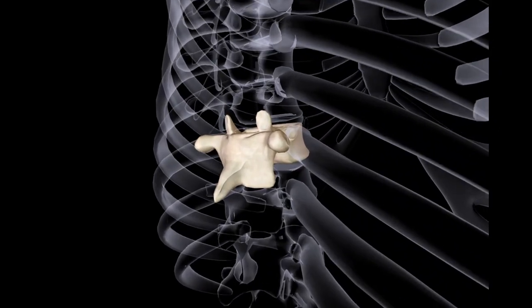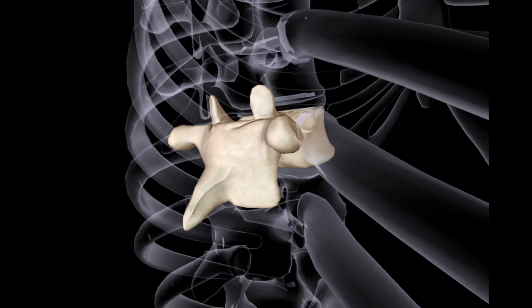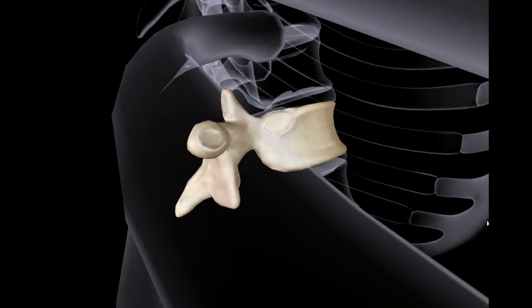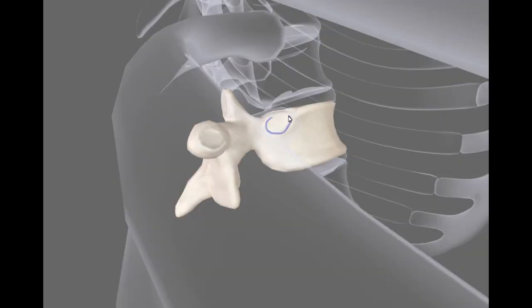The tenth thoracic vertebra articulates with the head of the tenth rib only. The facet is placed at the upper border of the body. It is usually incomplete but when the tenth rib fails to articulate with the ninth thoracic vertebra it is complete and circular in outline. The transverse process may or may not have articular facet for the tubercle of the tenth rib.